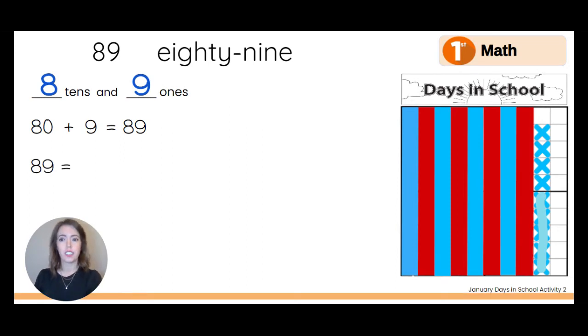89 equals, let's count the blue ten rods. How many blue tens? 10, 20, 30, 40. So 89 equals 40 plus, how many red ten rods? One, two, three, four red ten rods.